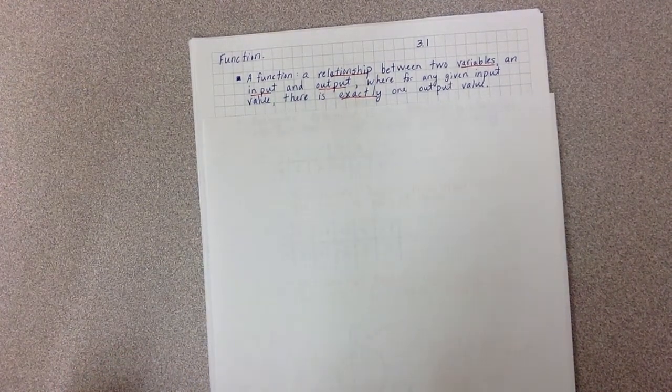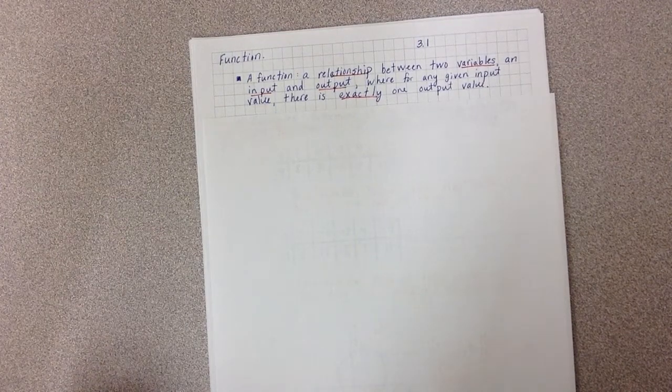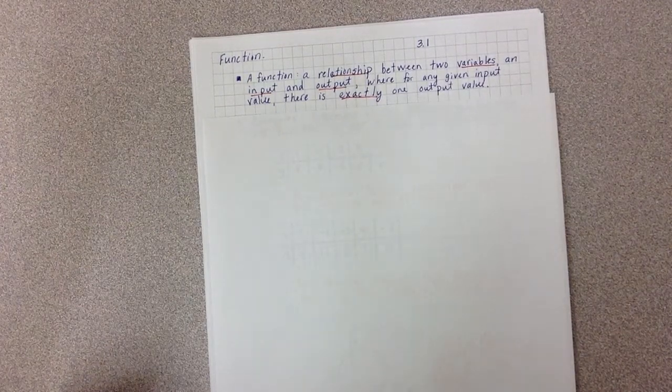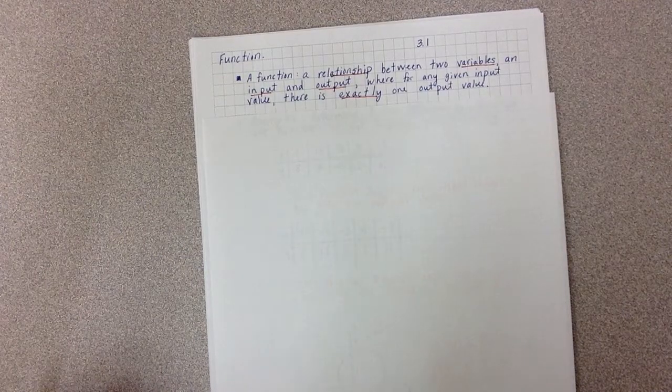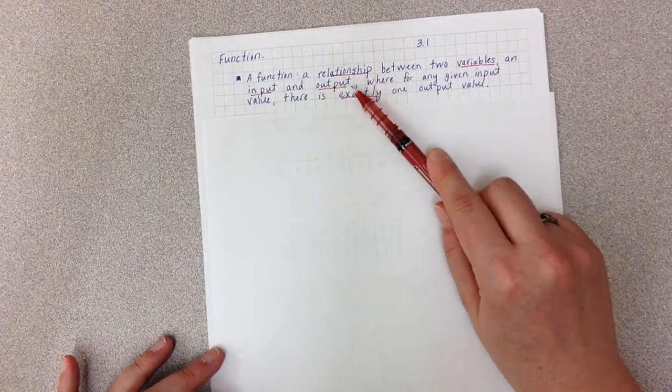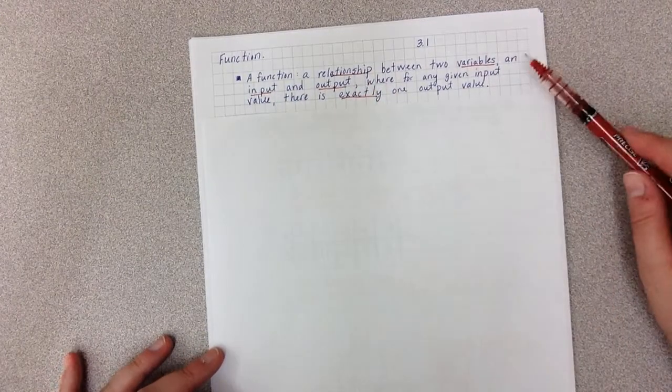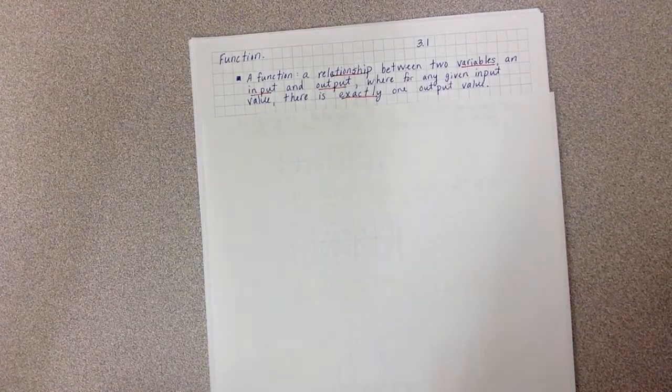This video is on functions, which is the topic you covered in 3.1. So first, a definition: A function is a relationship between two variables, an input x value and output y value, where for any given input value there is exactly one output value.